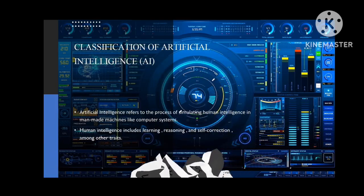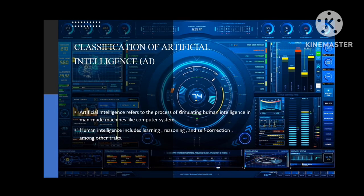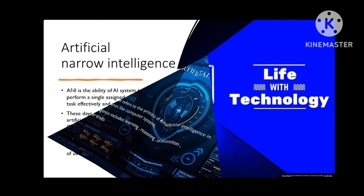Other examples include translation between natural languages as well as other mapping and input tasks. Now the second topic is the classification of artificial intelligence. Artificial intelligence refers to the process of simulating human intelligence in man-made machines like computer systems. Human intelligence includes learning, reasoning, and self-correction, among other things.